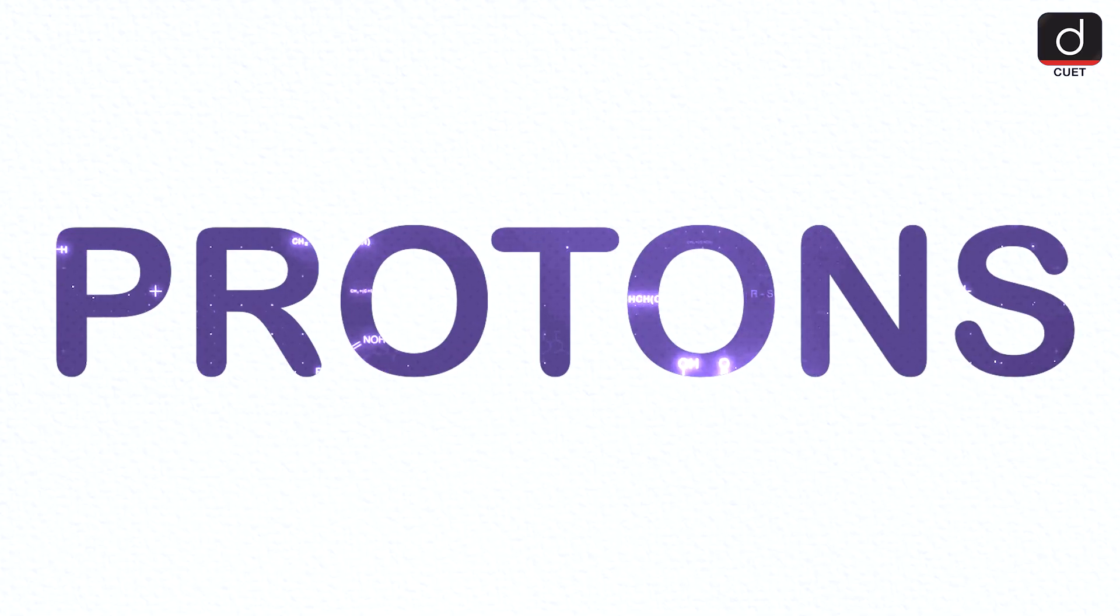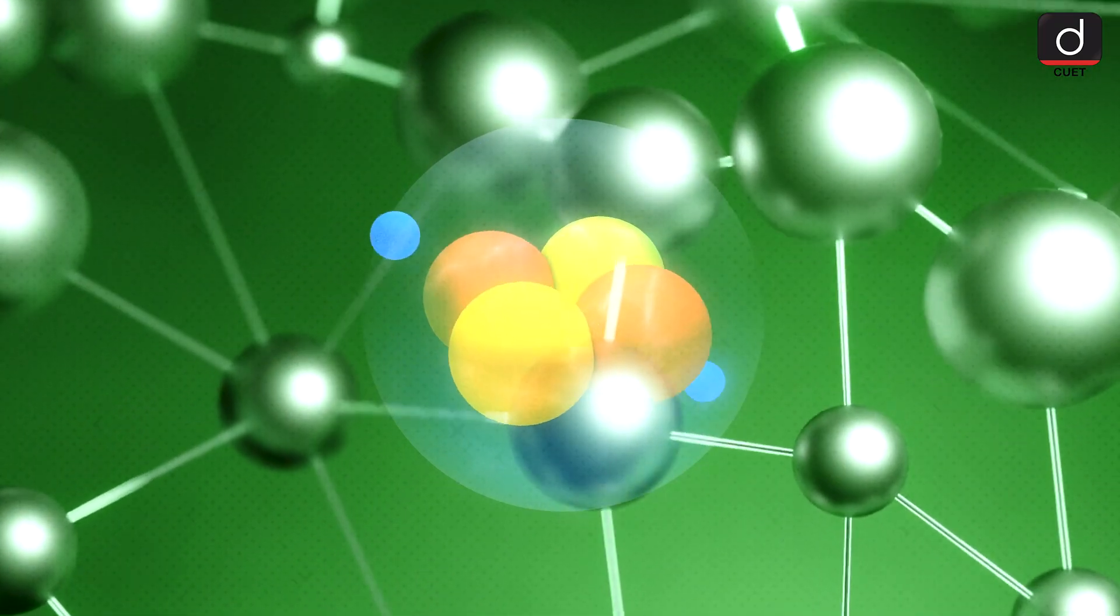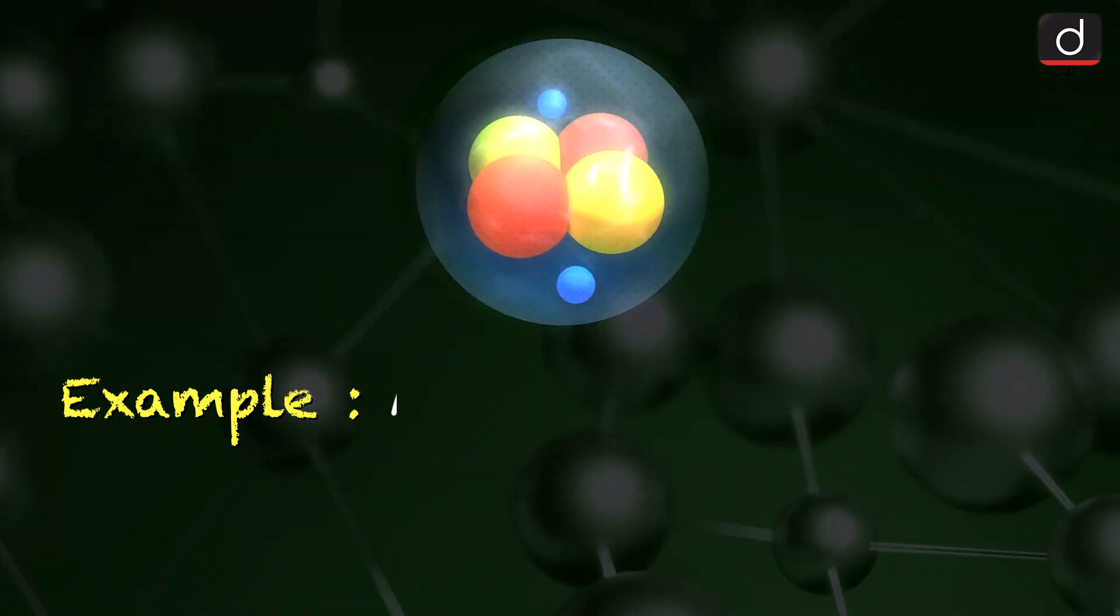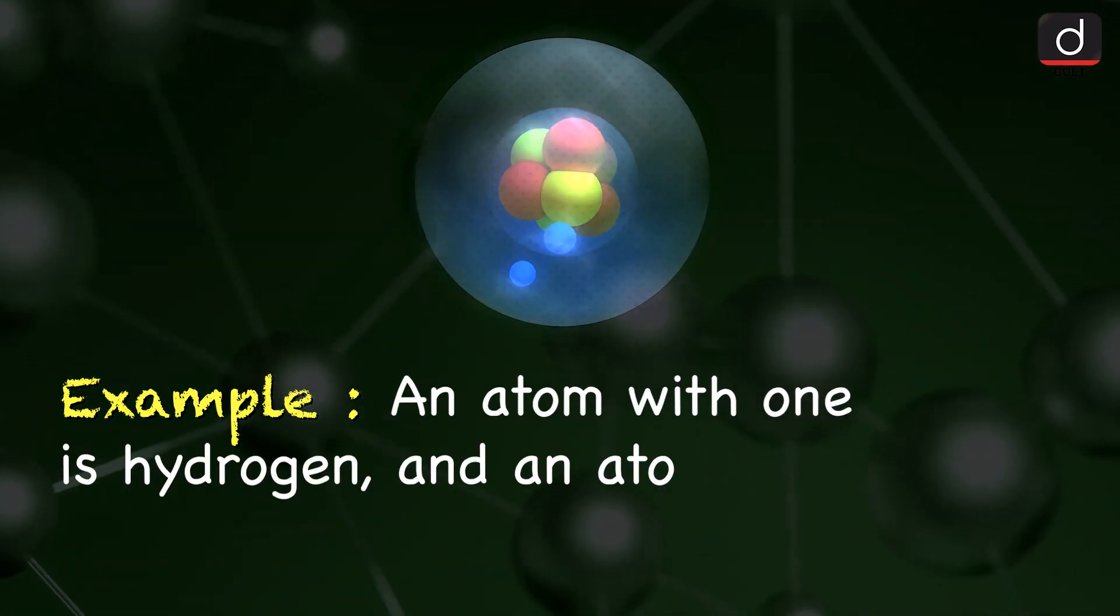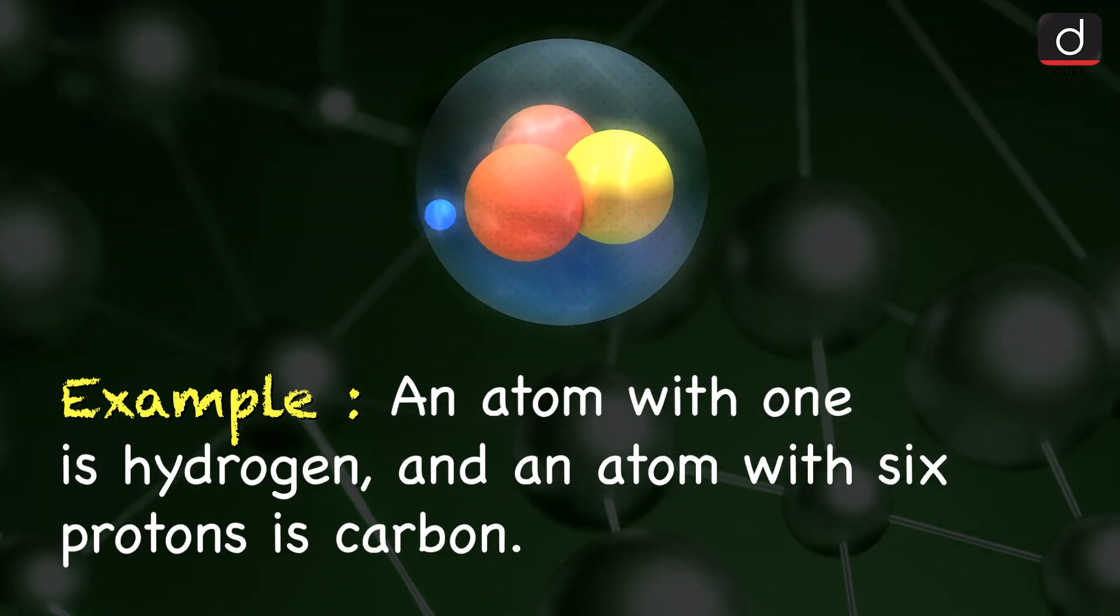1. Protons. These have a positive charge. They determine the identity of the atom. For example, an atom with one proton is hydrogen and an atom with six protons is carbon.